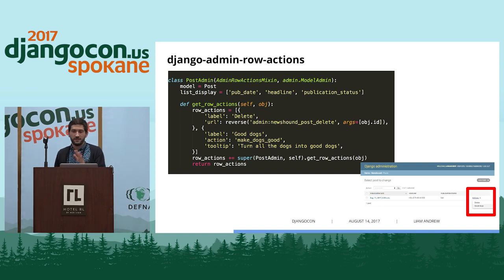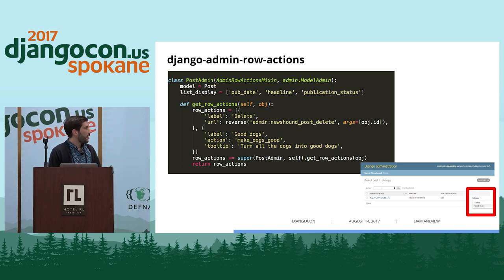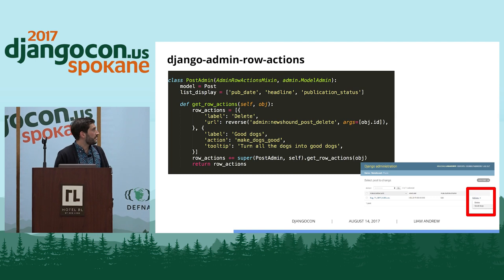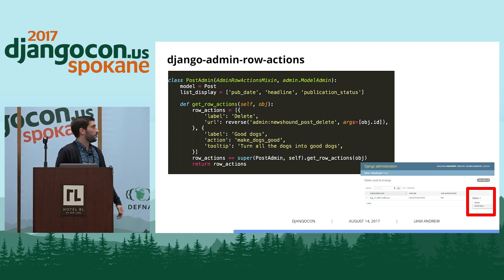Moving into libraries and packages: what if you want to add actions for each individual item in your changelist? There's a really handy package called DjangoAdminRowActions. It adds a column in the corner with a dropdown called Actions — you click it, and you can either redirect to the delete view for that individual object or perform some other action. It's usually defining a particular action or a particular URL, and then it does the rest for you.